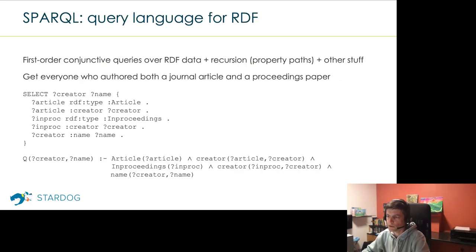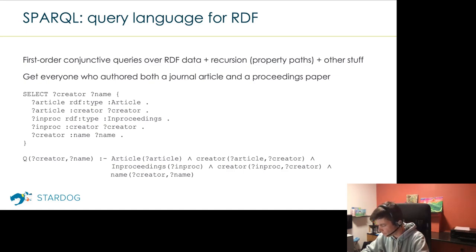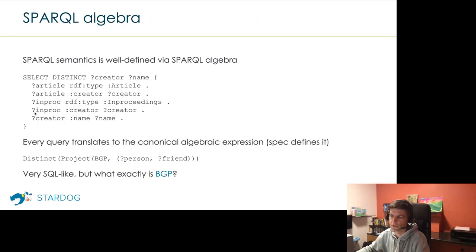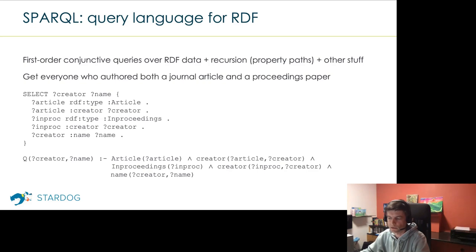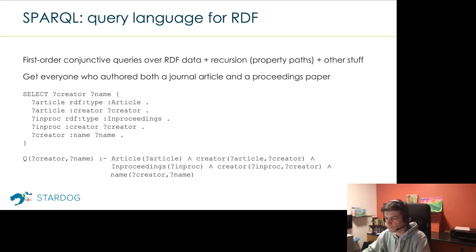SPARQL is essentially first-order conjunctive queries over RDF — that's the core. On top of that there's recursion, filters, distinct projections, and so on. For example, this query from a standard SPARQL benchmark queries for all creators of both journal articles and proceedings papers. The first two triple patterns select articles, the second two select proceedings papers; they share the same creator variable, then we get the name of the creator. You can write it as a Datalog program with essentially the same semantics.